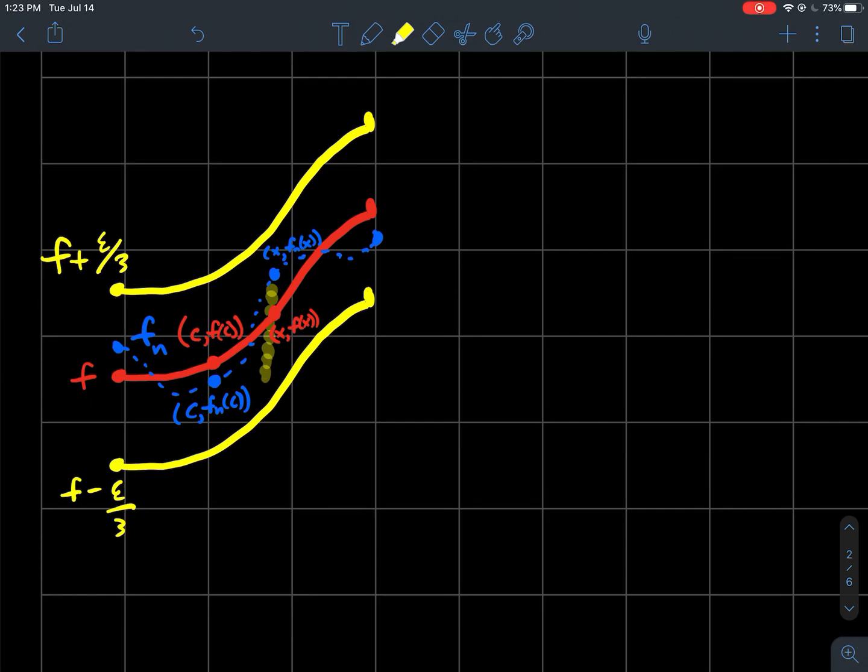And then similarly what that forces then, what I want to show, is that the corresponding difference between the two y values on the graph of my function f also has to have a difference that's smaller than the length of this window. So that's what we're going to do. We're going to use this picture to try to formalize that argument and hopefully make it perhaps a little bit more clear as well.